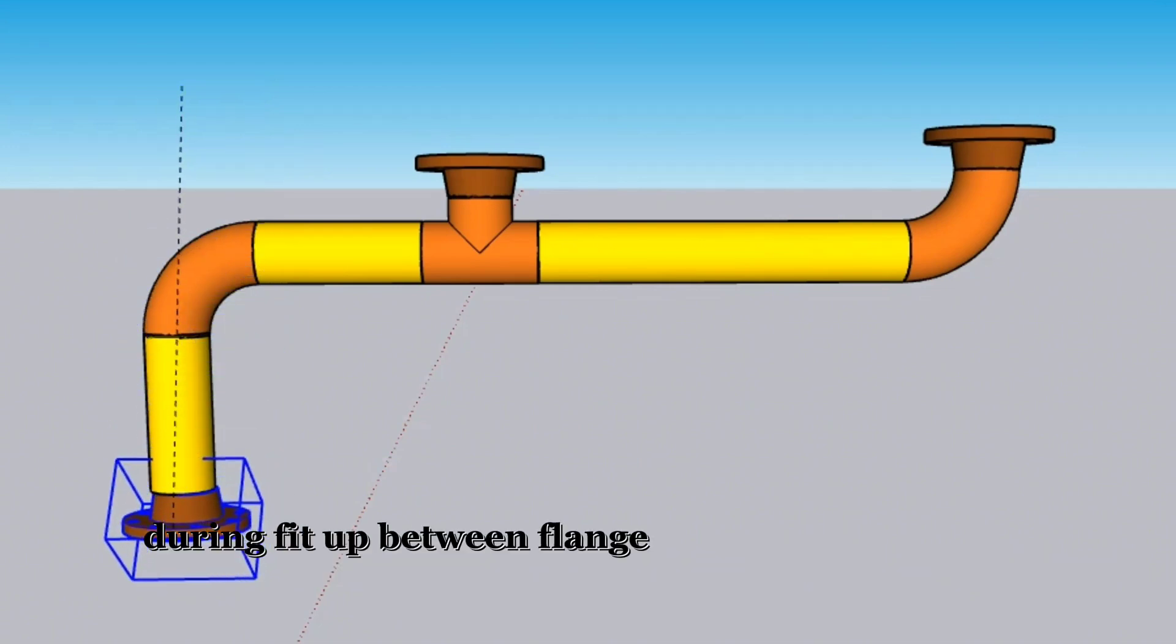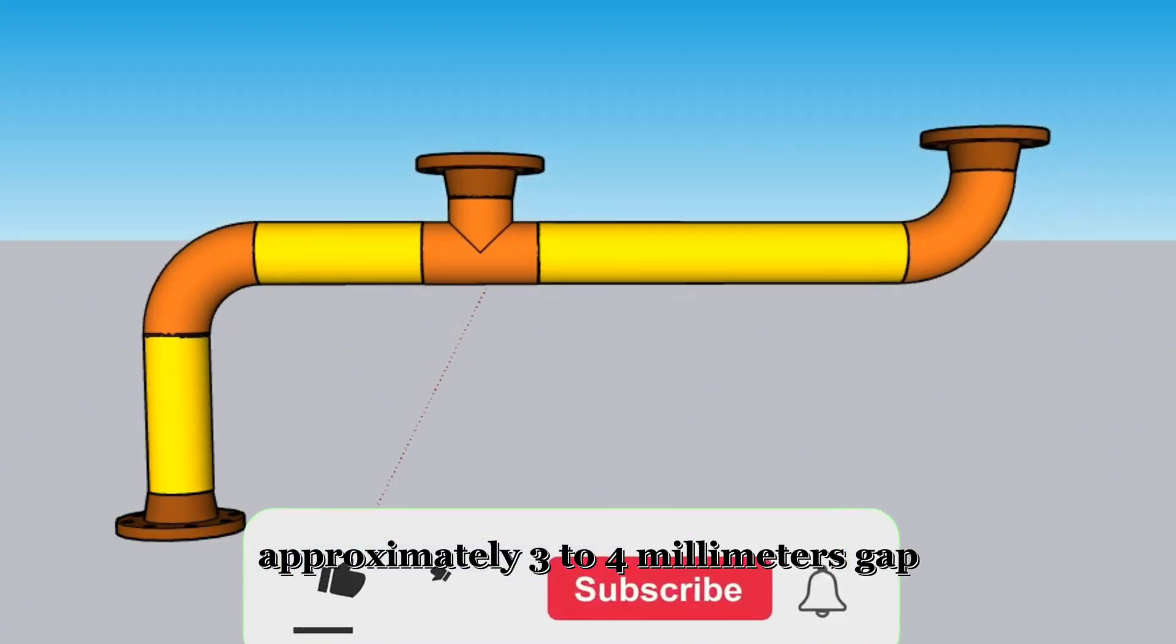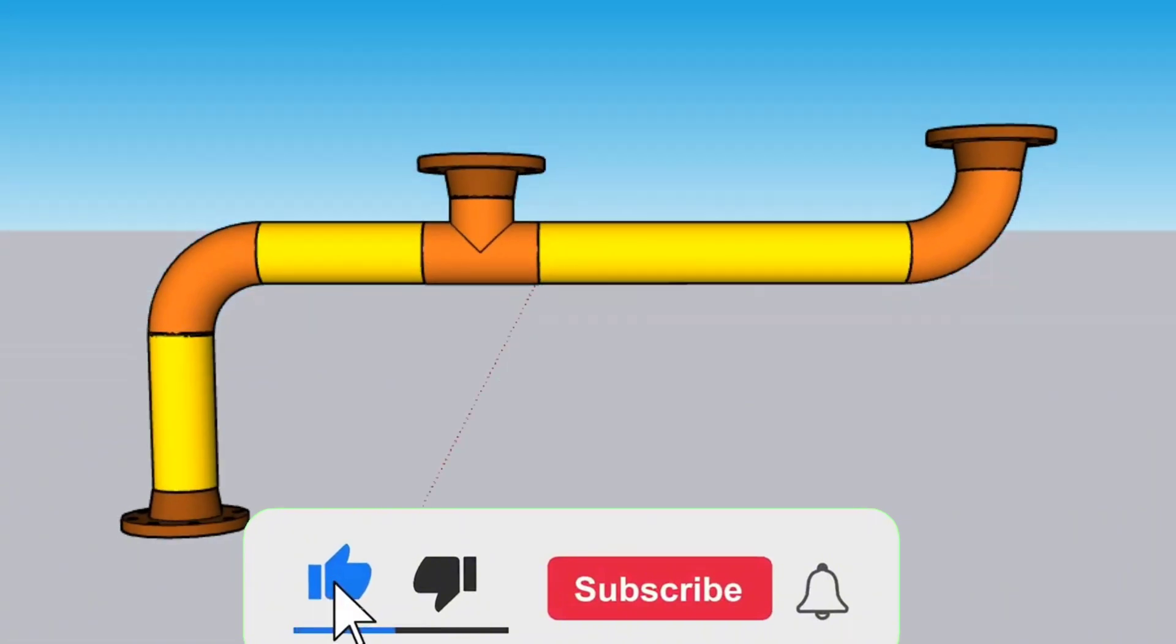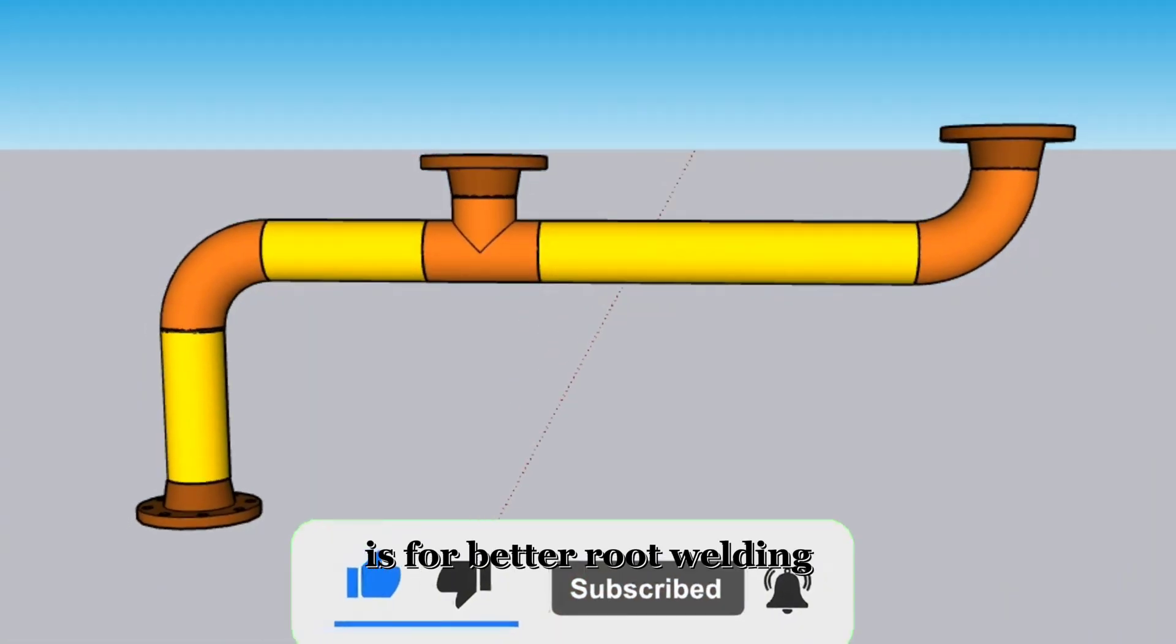During fit-up, between flange and elbow should be a gap, approximately 3 to 4 mm. It is for welding. Having this 3-4 mm gap is for better root welding.